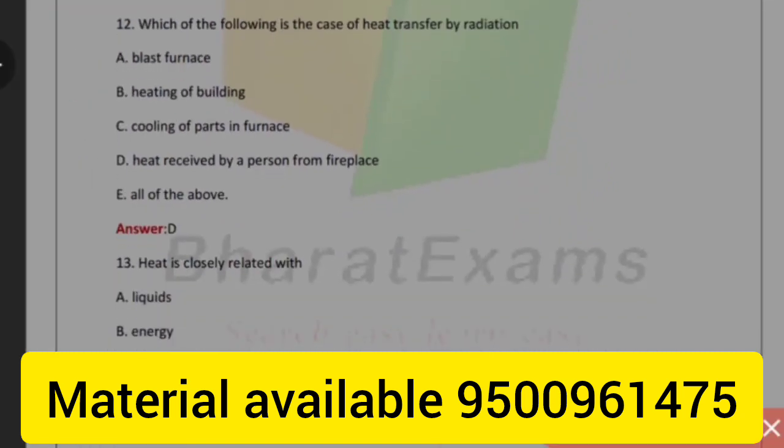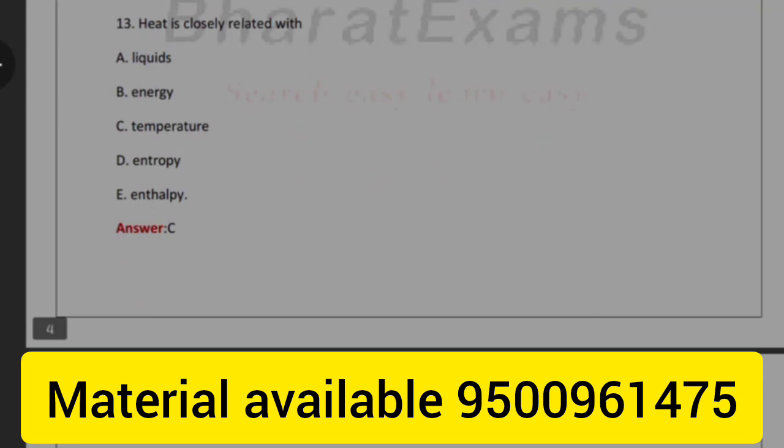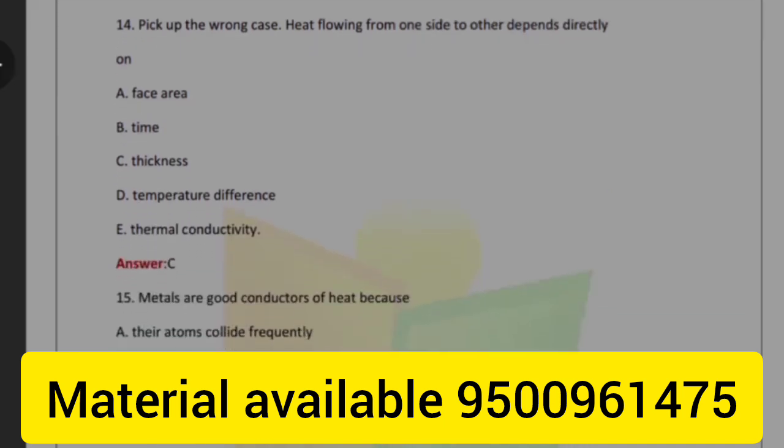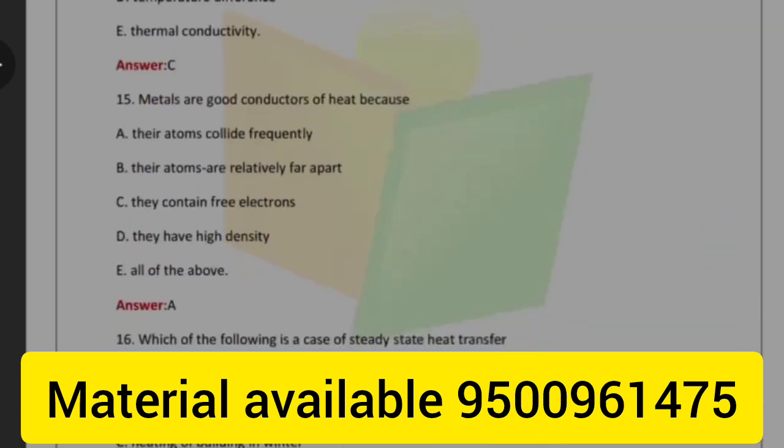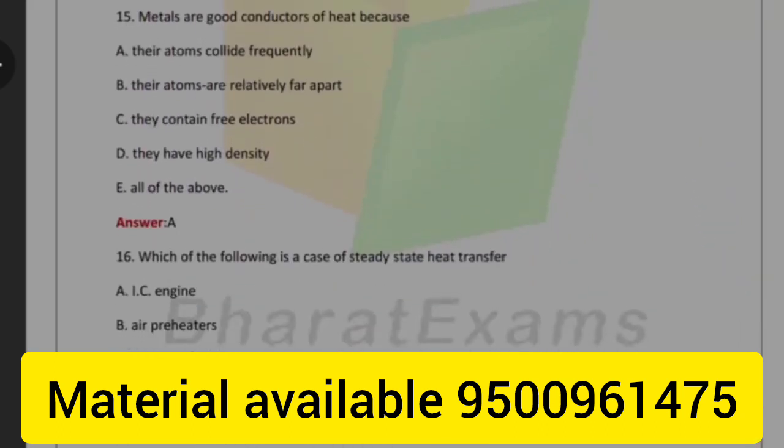Which of the following is the case of heat transfer by radiation? Heat received by a person from fireplace. Heat is closely related with temperature. Pick the wrong case: heat flowing from one side to another depends directly on thickness. Metals are good conductors of heat because their atoms collide frequently.